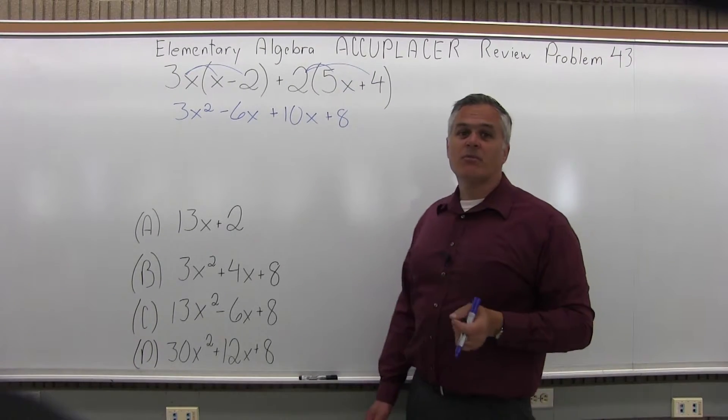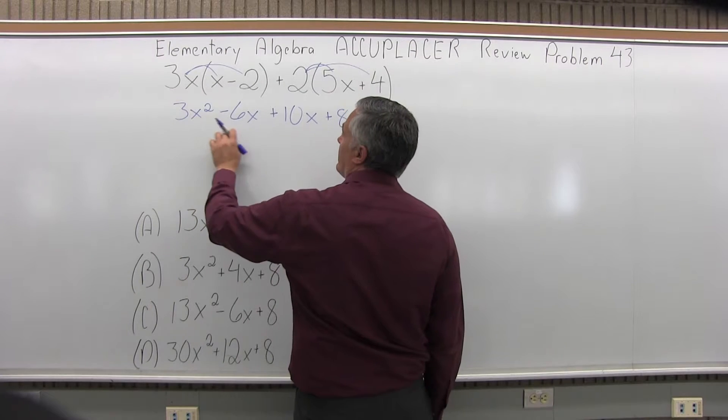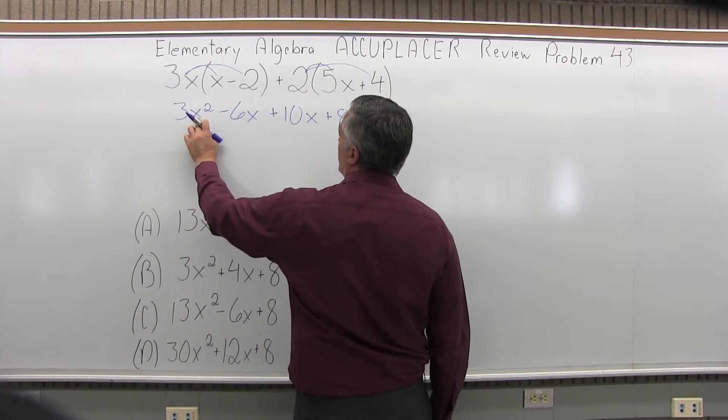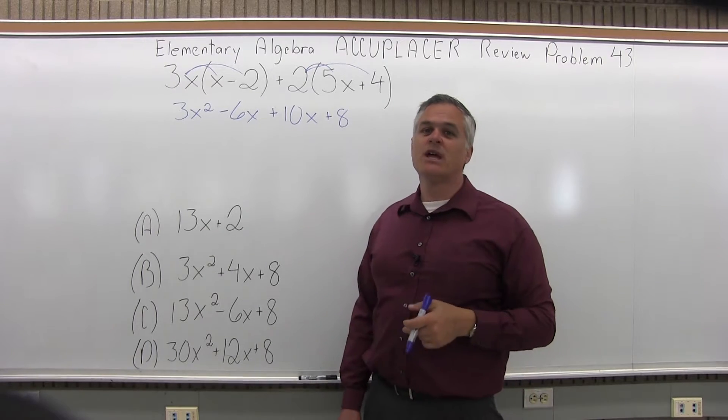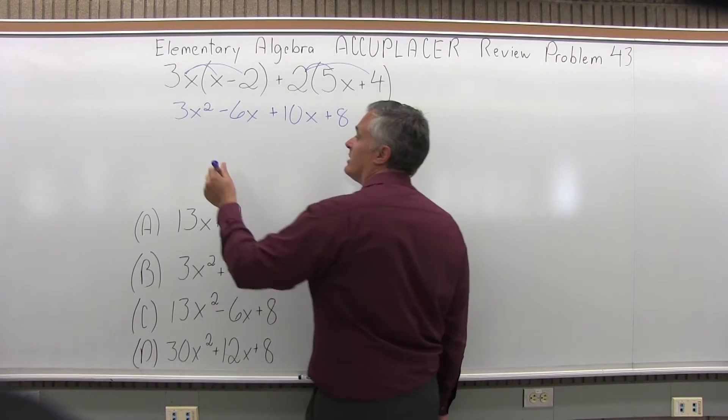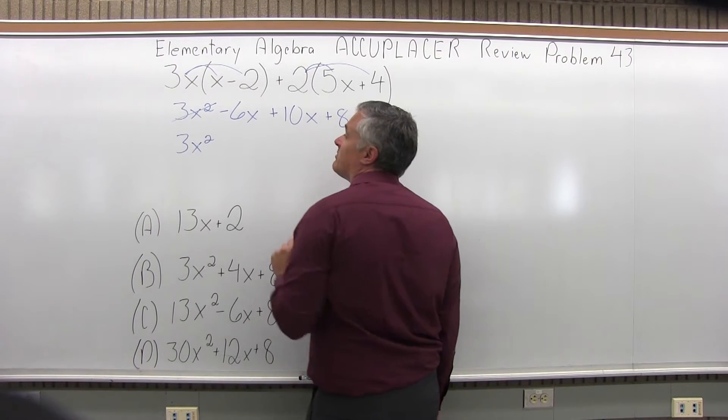And I want to combine whatever can be combined. So the first piece, 3x squared, there are no other x squareds. I cannot put an x squared together with just an x to the first power. I have to look for other x squares. There are none. So the 3x squared can just stay by itself, 3x squared, and I'm done with that piece.